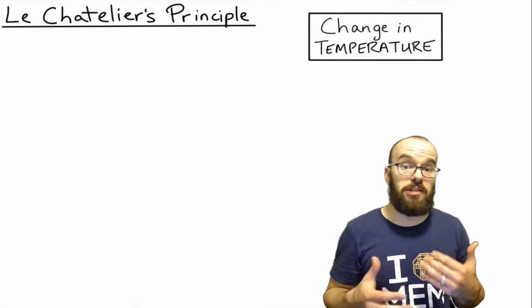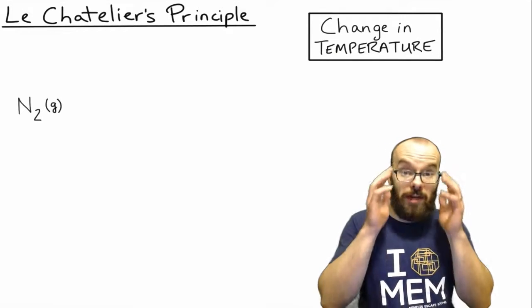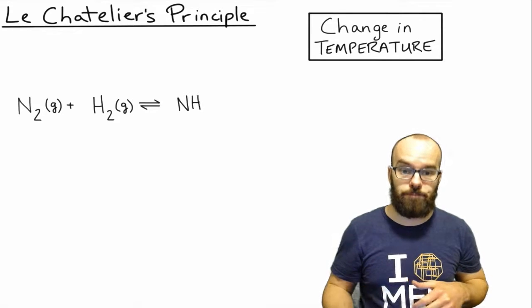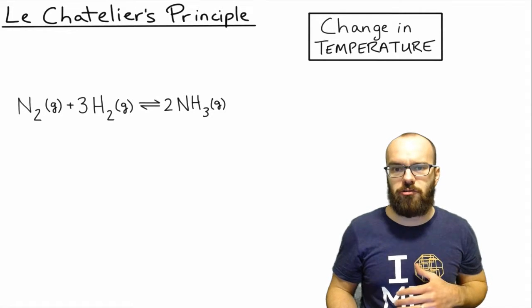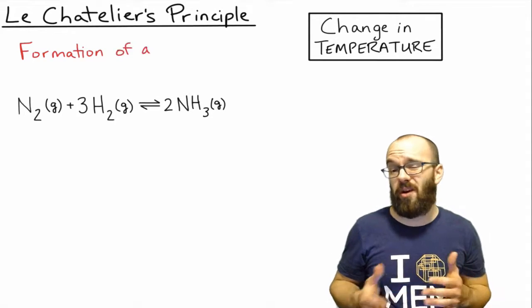Finally, let's take a look at what happens whenever we change the temperature. Let's go back to our ammonia reaction again. This time we need to know something extra about it. We need to know whether it's endothermic or exothermic.